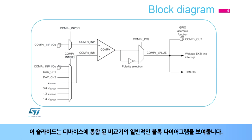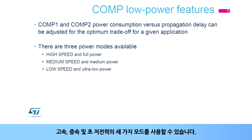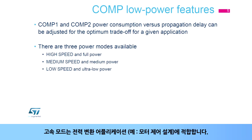This slide shows the general block diagram of the comparator integrated in the device. The comparator's power consumption can be adjusted to achieve the optimum trade-off between speed and energy efficiency for a given application. There are three modes available: high-speed, medium-speed, and ultra-low power. High-speed mode would be preferred for power conversion applications, for example a motor control design.